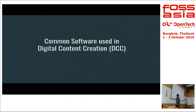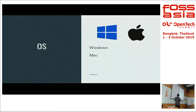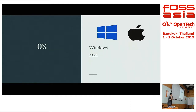We'll talk about the common software used in digital content creation. I've categorized them into many categories. First, the OS — the common OS in the industry, of course, is Windows or Mac. Some might say professionals only use Mac, but that's not the case; you can find all kinds of systems in a production house.